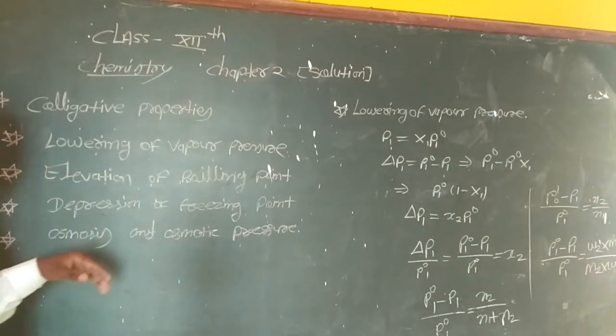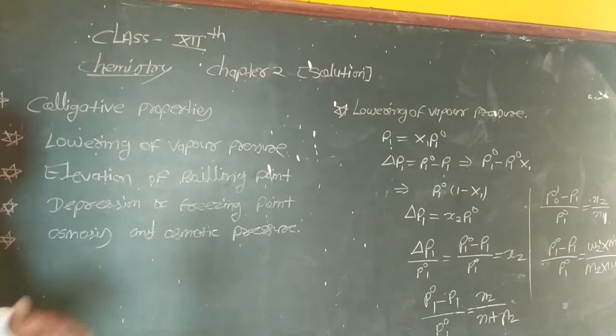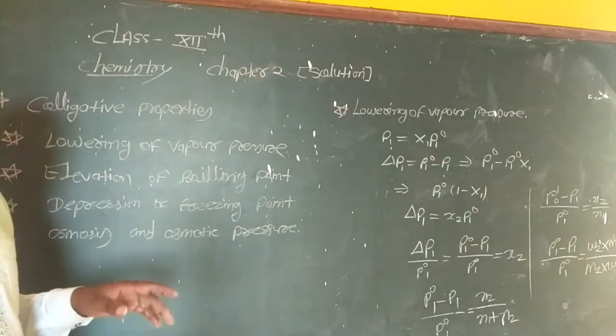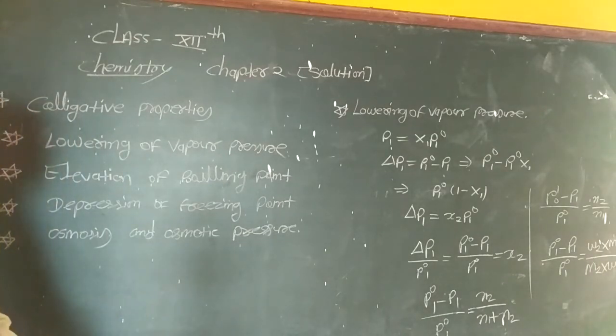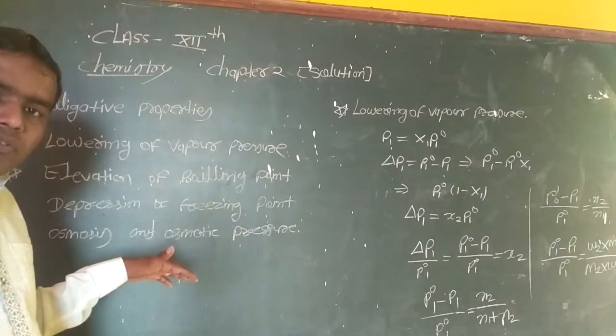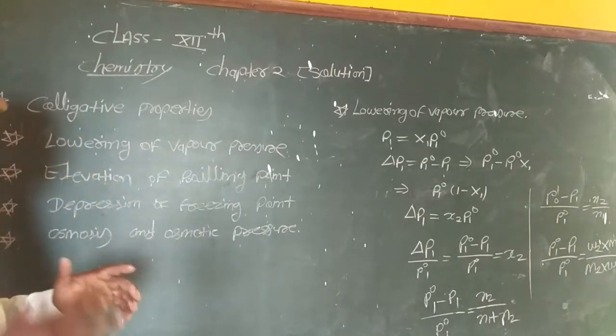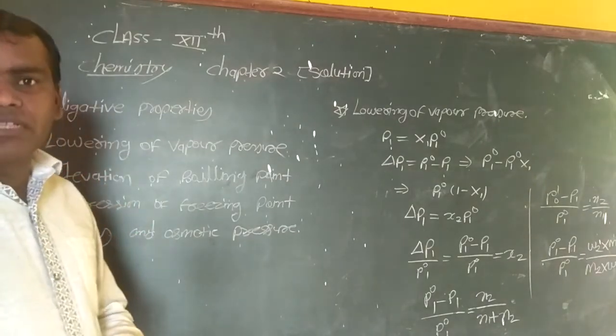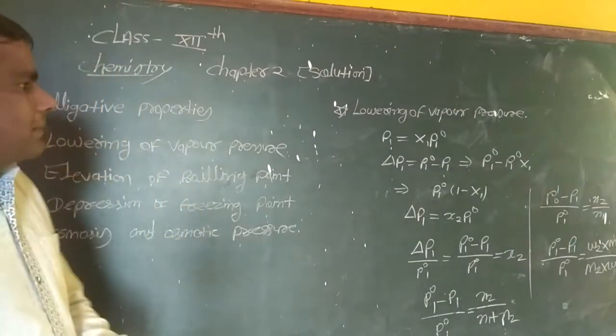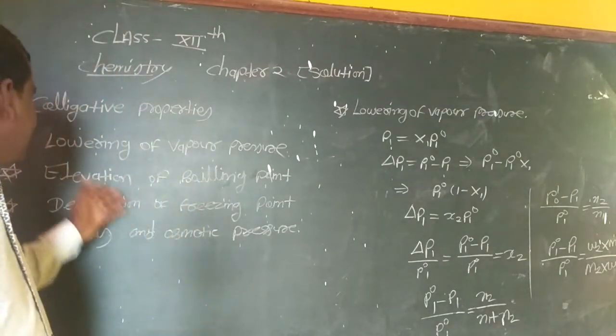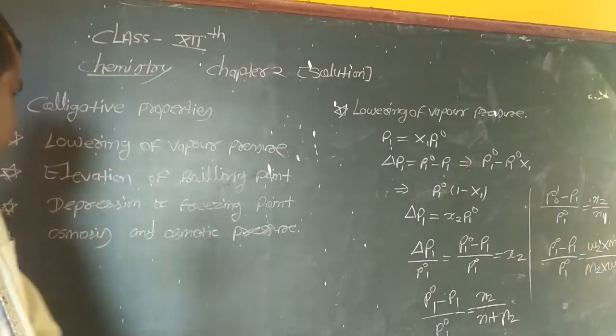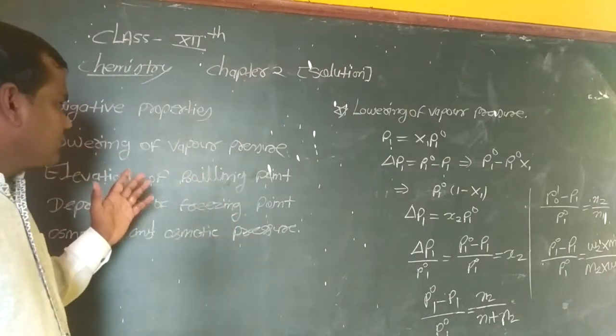What are the colligative properties? Lowering of vapor pressure - when modeling point increases, freezing point decreases. When we add a non-volatile solute to the solution, the vapor pressure decreases. This is the lowering of vapor pressure.